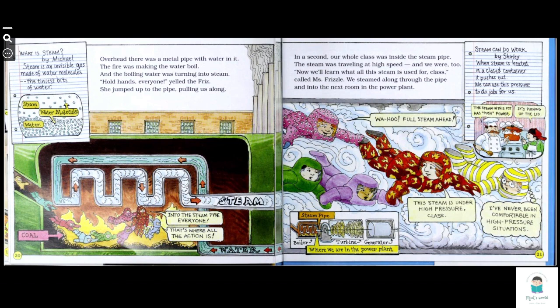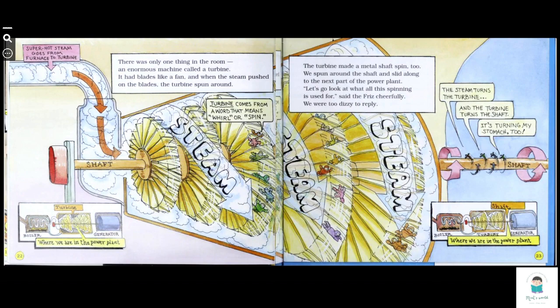And look where we are in the power plant. We are at the end part of the boiler. There was only one thing in the room: an enormous machine called a turbine. It had blades like a fan, and when the steam pushed on the blades, the turbine spun around. Super hot steam goes from furnace to turbine. Turbine comes from a word that means whirl or spin.